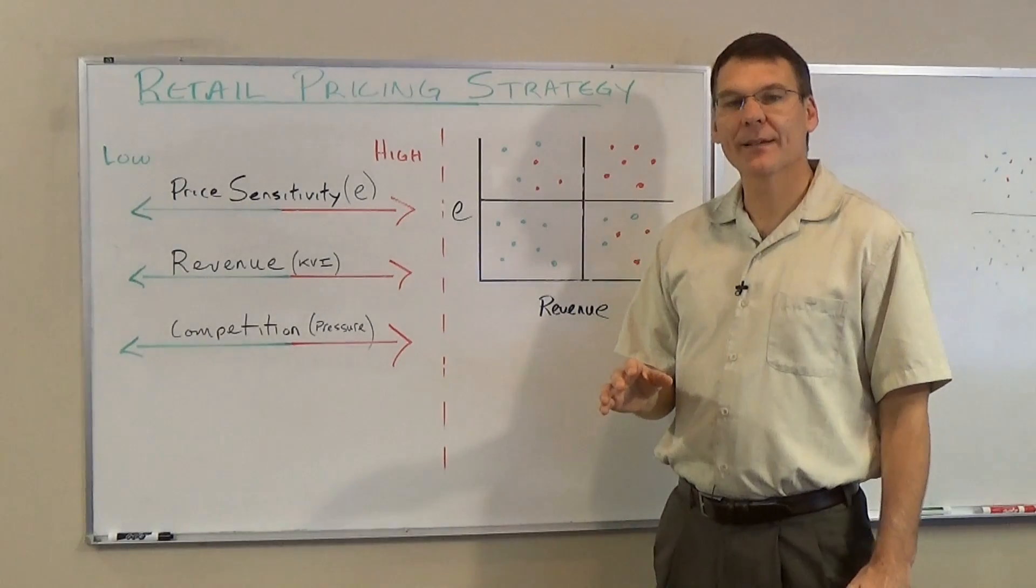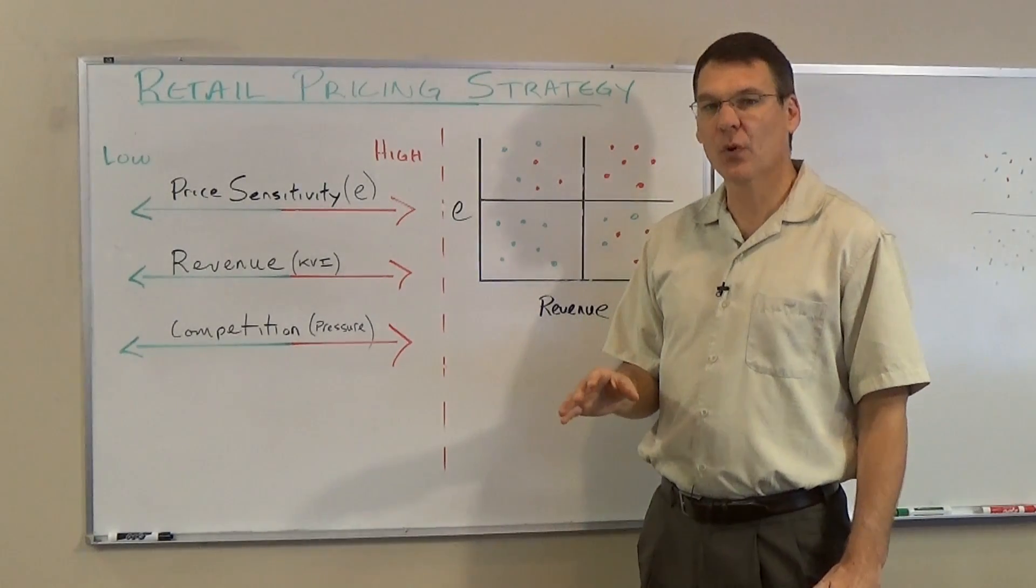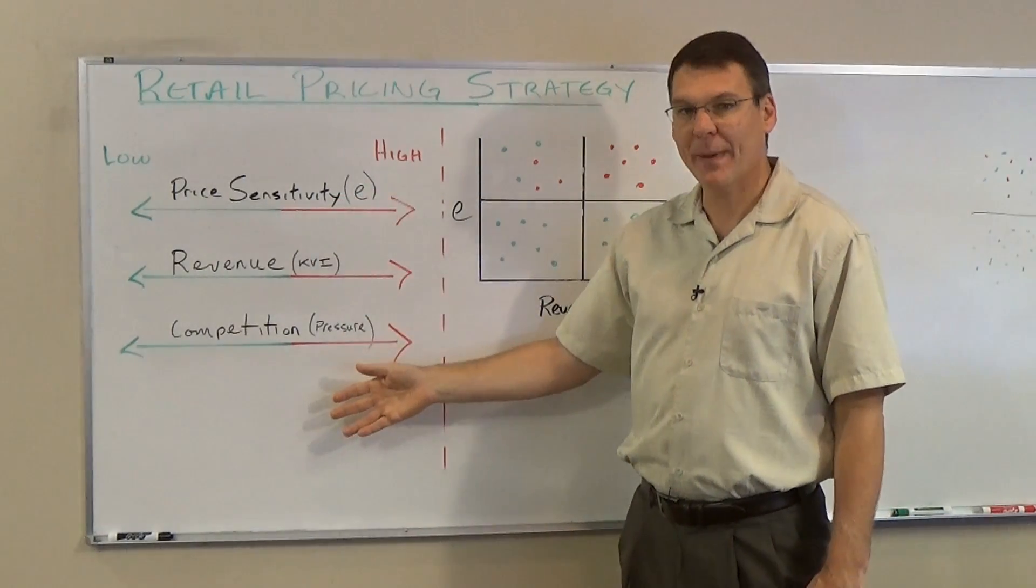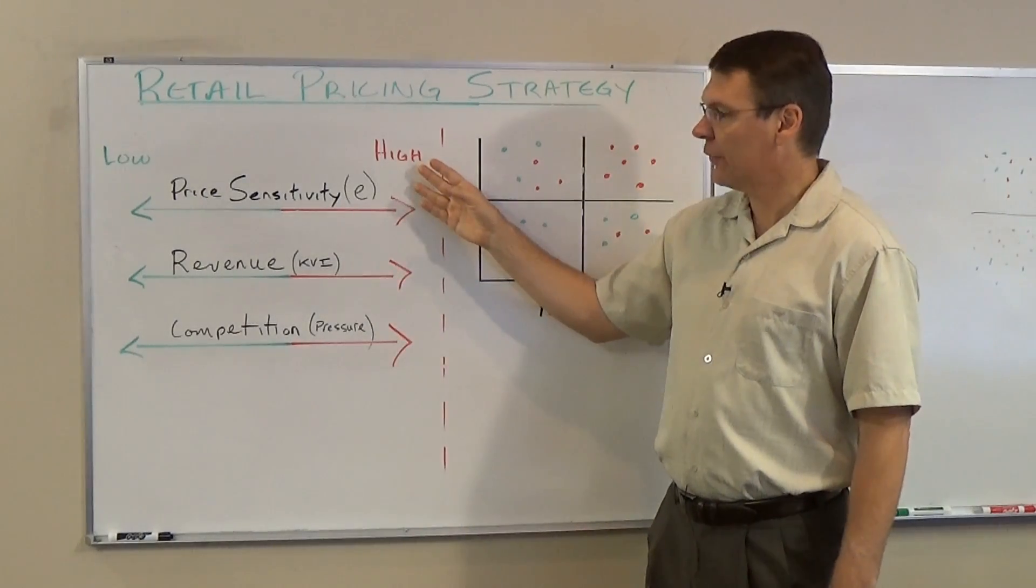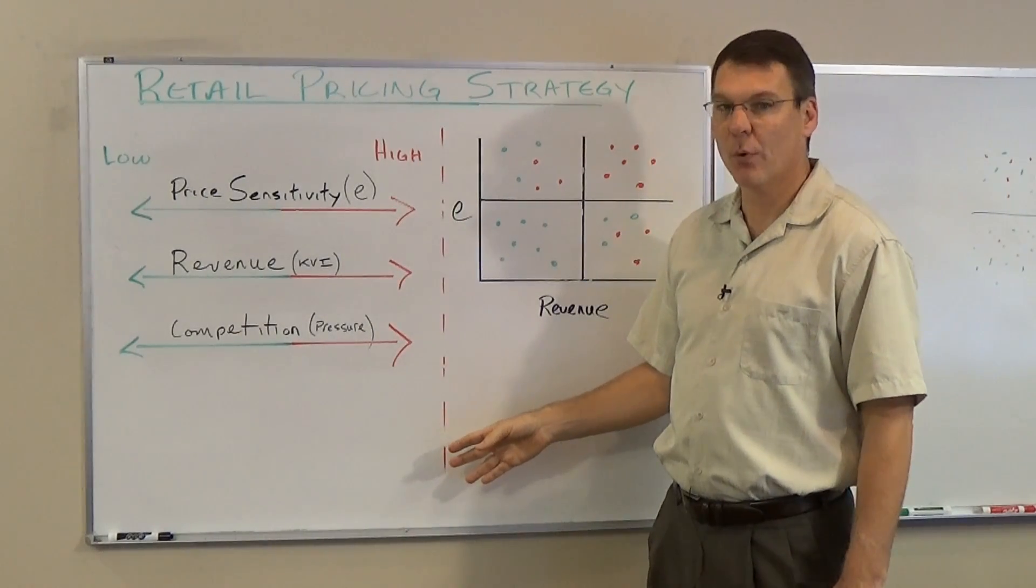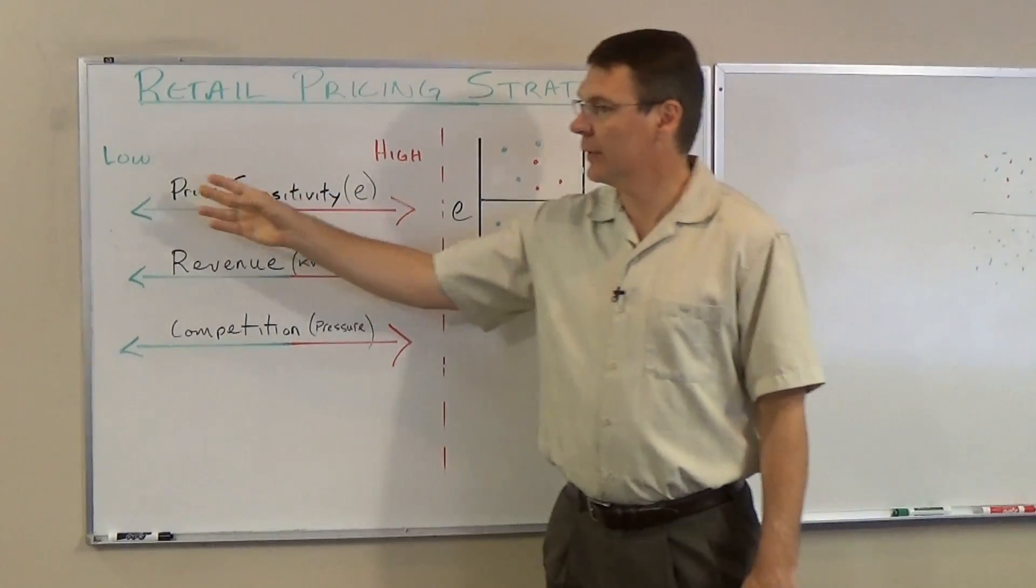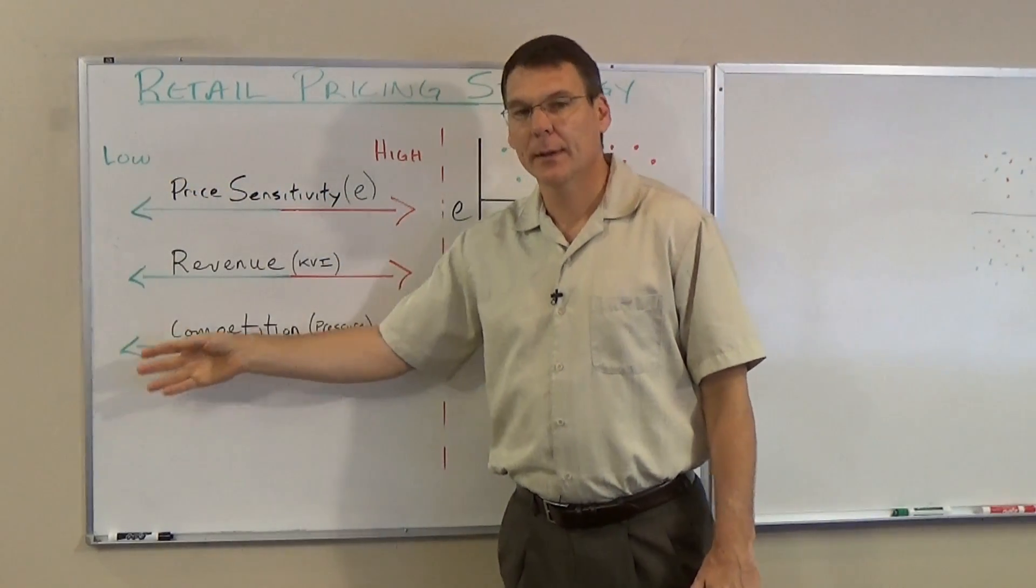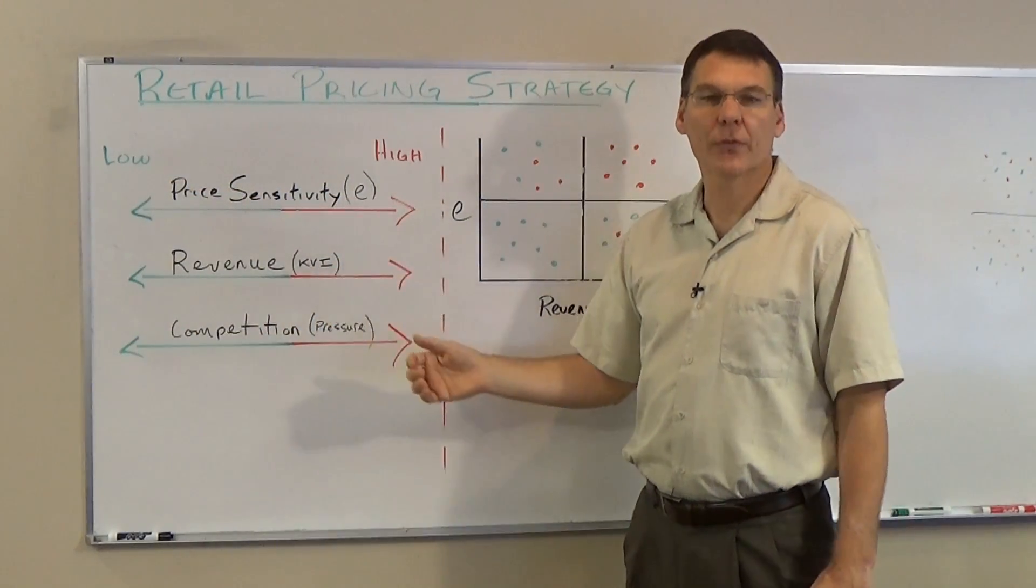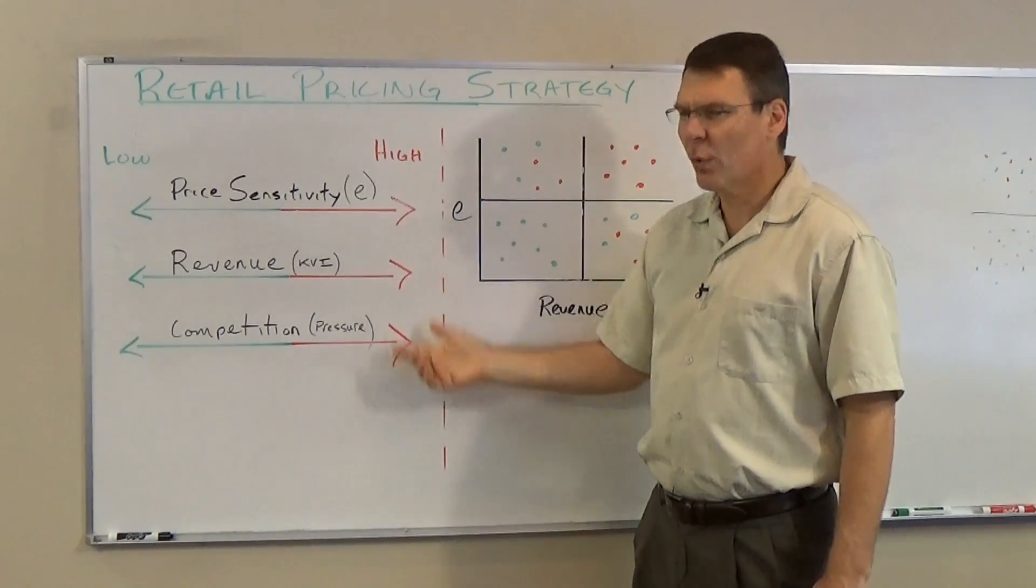Each product in a category is scored on these three metrics. Some products score high across the board, others score low, and some are mixed.